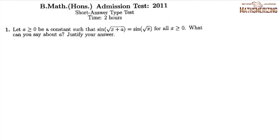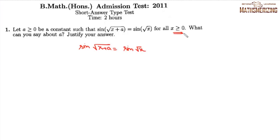Today we will discuss ISI's BMath 2011 subjective paper. The first question is: let a ≥ 0 be a constant such that sin(√(x+a)) = sin(√x) for all x ≥ 0. Then what can you say about a? Justify your answer.